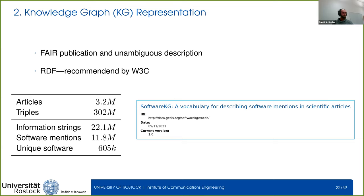All information extracted with our method was modeled in a knowledge graph, allowing fair publication of the data and an unambiguous description. The data is available as RDF triples — the Resource Description Framework, a recommended standard by the W3C. We also developed our own vocabulary: the SoMeSci vocabulary for describing software mentions in scientific articles. Within those 3.2 million articles, we found 22.1 million information strings referring to software or associated information, of which 11.8 million are software mentions, disambiguating to 600,000 different software.